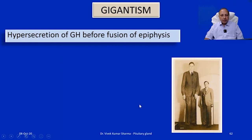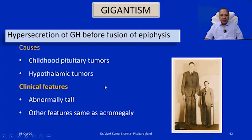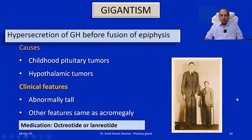If hypersecretion of growth hormone occurs from childhood before puberty is over, without epiphyseal fusion, vertical growth keeps increasing — this is called gigantism. It can be due to childhood pituitary tumors or hypothalamic tumors. Clinical features include abnormal tallness and most of the features seen in acromegaly. Treatment involves octreotide or lanreotide to inhibit the excess growth hormone release.